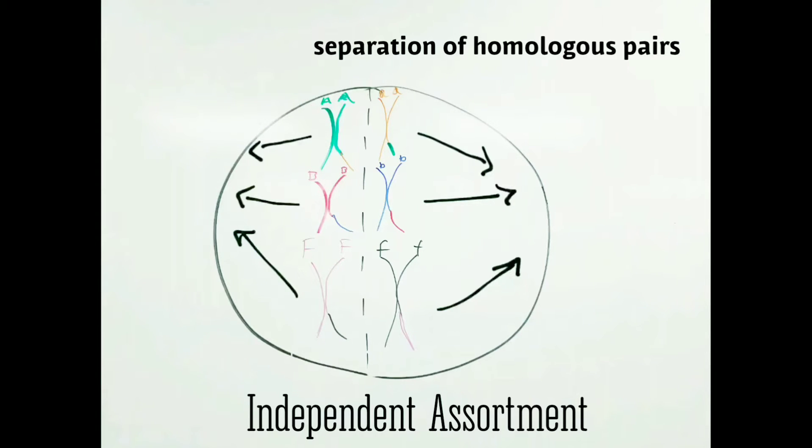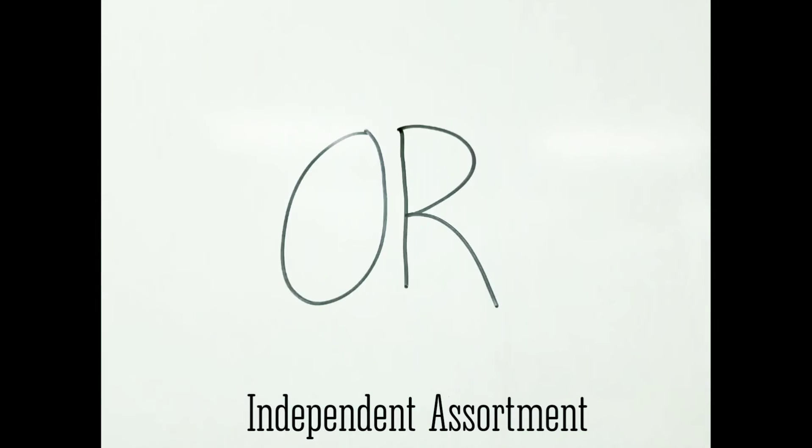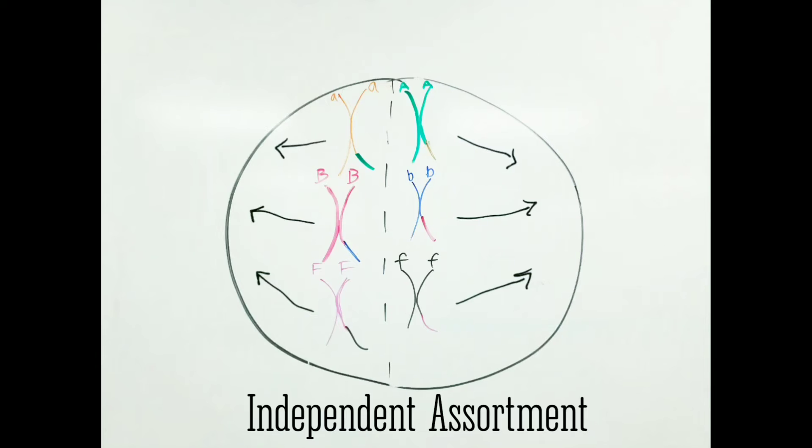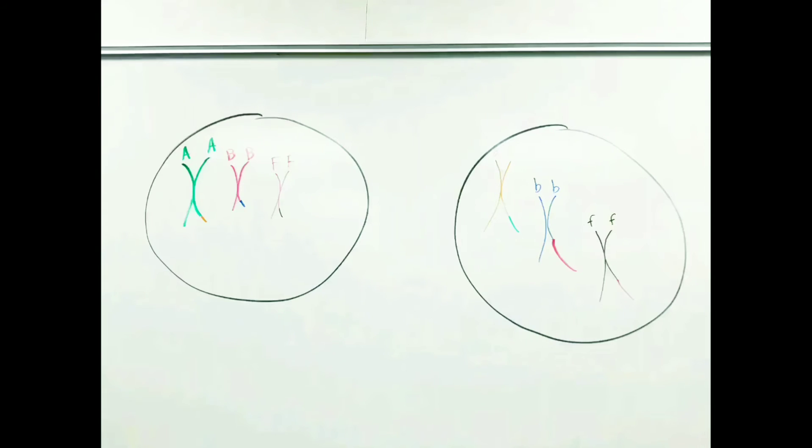Spindle fibers will attach to the centromere of the chromosomes. The homologous pairs will then be pulled by the spindle fibers and separated to opposite sides of the cell. The end result is two separate haploid cells, meaning the cells now n equals 6, and they are both genetically different.